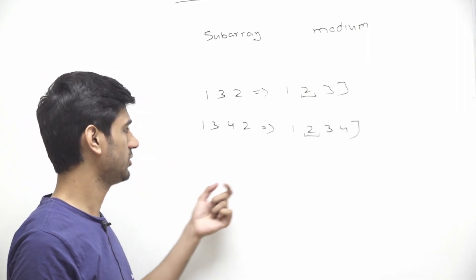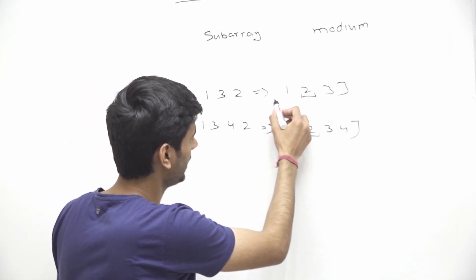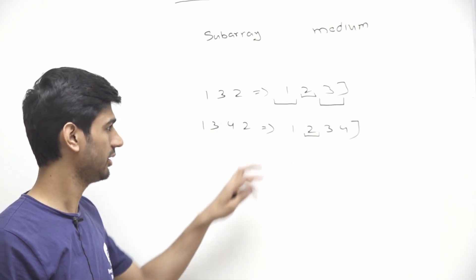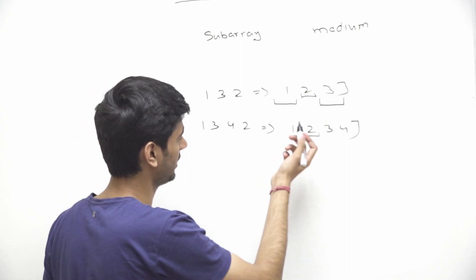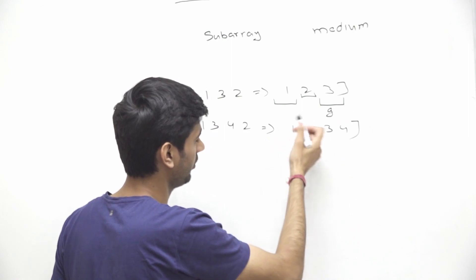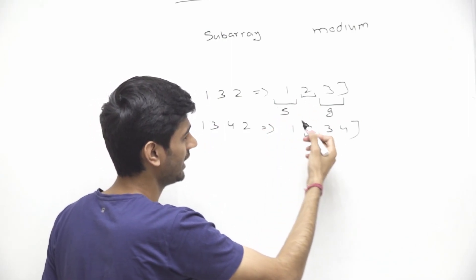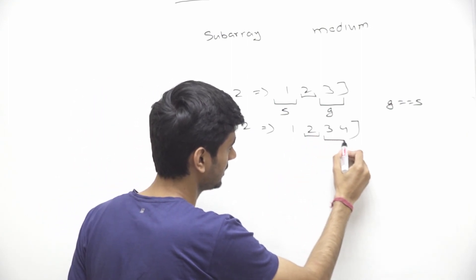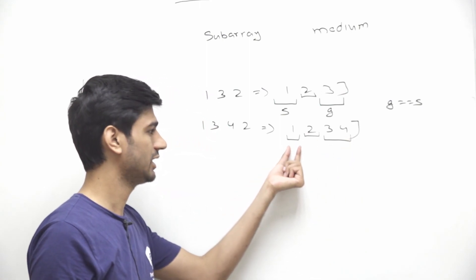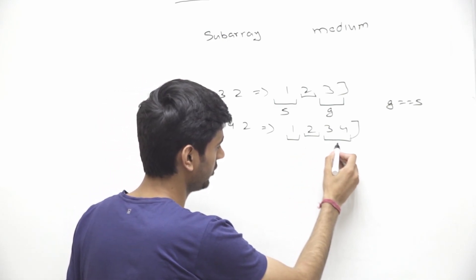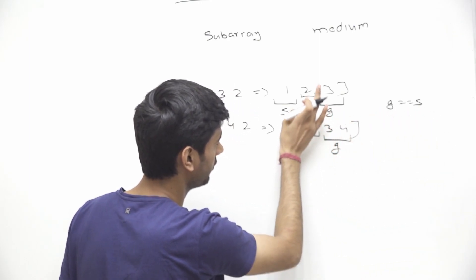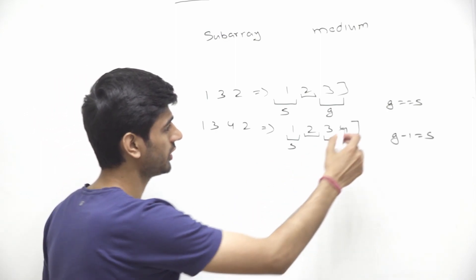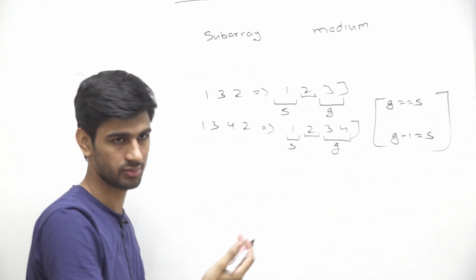Looking at median properties: if we want 2 as the median, the number of elements smaller than 2 must relate to those greater. Let g = count of elements greater than k, s = count of elements smaller than k. For odd-length subarrays, g must equal s. For even-length subarrays, g minus s equals 1. So either g − s = 0 or g − s = 1.